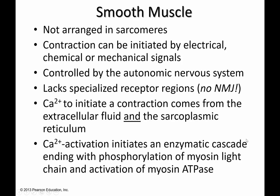Smooth muscle can sustain contractions for extended periods of time with very limited ATP hydrolysis. The cells tend to be small, spindle-shaped, narrow at the ends, and have a single nucleus. In smooth muscle, the proteins of contraction are not arranged in sarcomeres. Smooth muscle can be stimulated by electrical signals, chemical signals, or mechanical signals, and the mechanism of activation varies depending on where that smooth muscle is found. In general, smooth muscles are controlled by the autonomic nervous system, and it is still an increase in intracellular calcium that causes activation — coming from both extracellular fluid and from the sarcoplasmic reticulum.